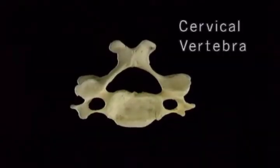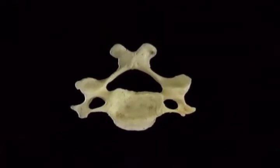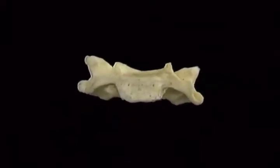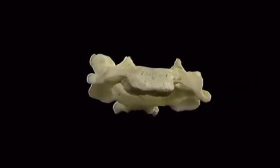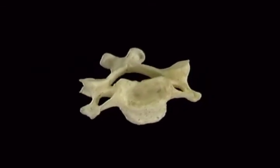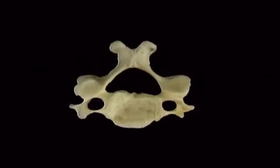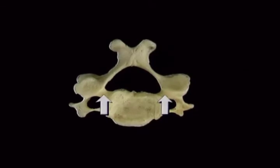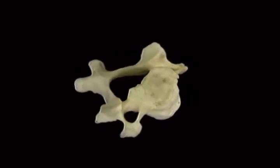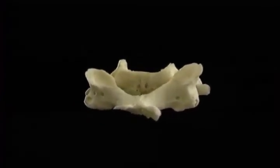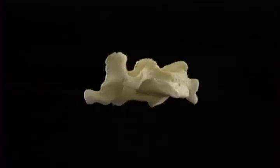Here's a typical cervical vertebra — the fourth one. The body is small. The upper surface of the body is curved, somewhat in the shape of a saddle, and the lower surface has the same curvature in reverse. The vertebral foramen is large and triangular. The neural arch is formed mainly by the two straight laminae. The pedicles are very short. The spinous process is short and ends in a double point. The upper articular facets face upward and inward; the lower ones face downward and forward.